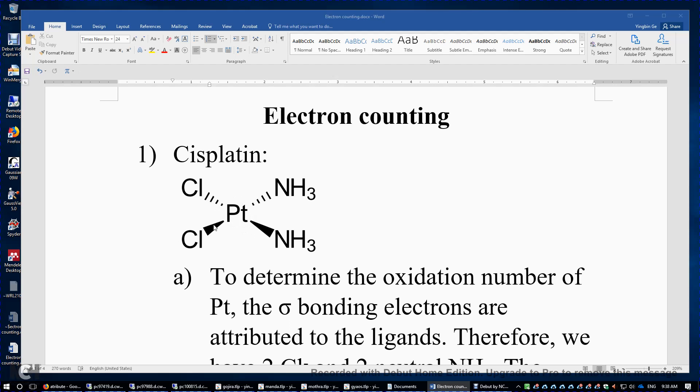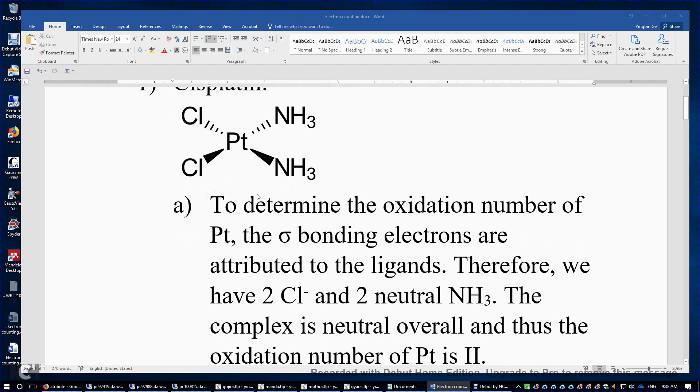And then there are 1, 2, 3, 4, four bonds surrounding platinum(II). So you have 8 plus 8. There are a total of 16 valence electrons surrounding this transition metal center.